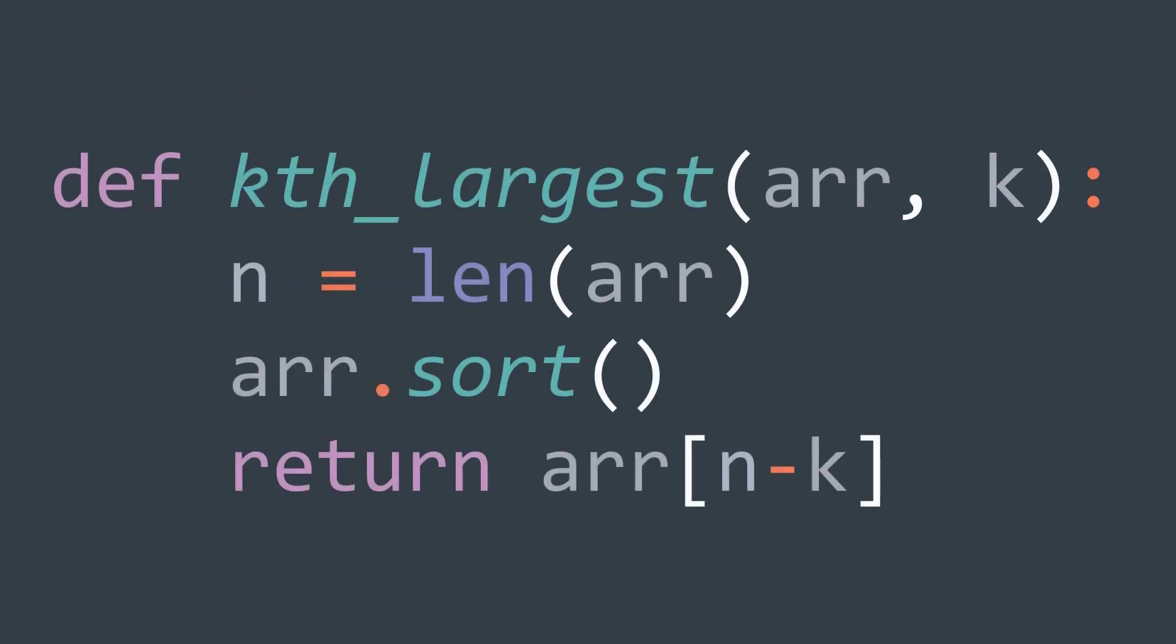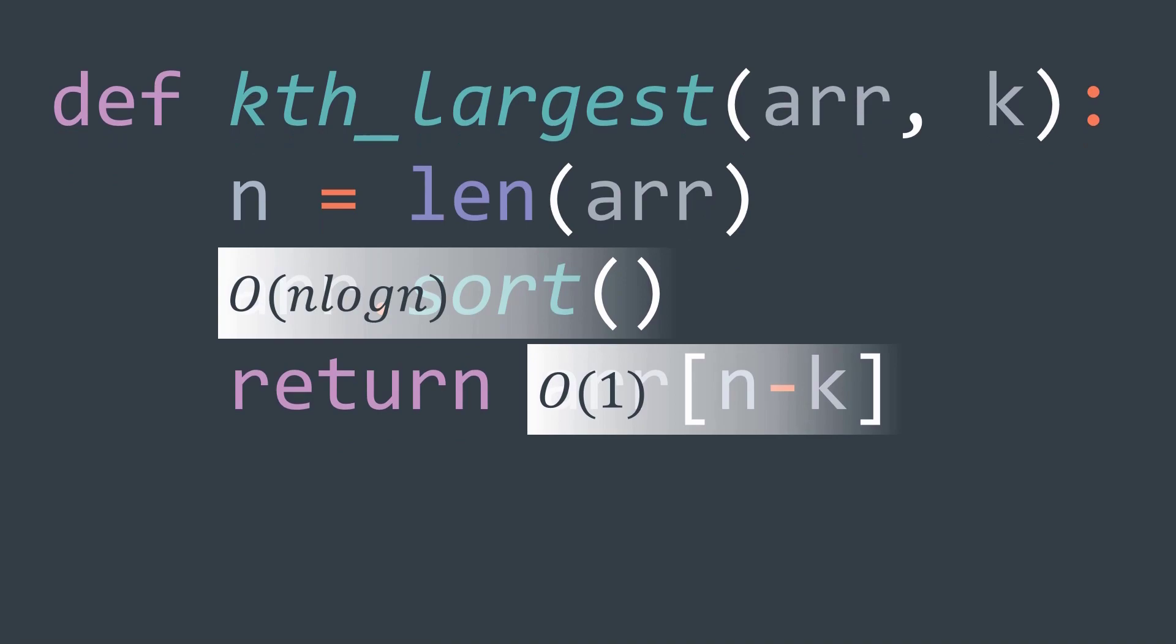In a general way, we sort arr, and we return arr of n minus k. n minus k represents the index of the kth element starting from the end. For the time complexity, we have O of n log n for sorting the array, and O of 1 for accessing. We get an O of n log n time complexity.